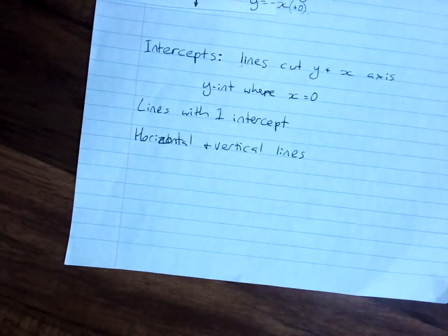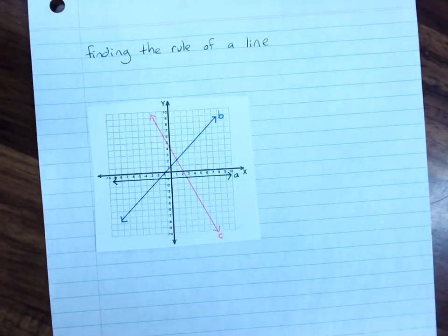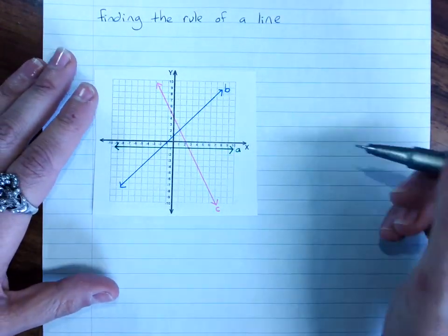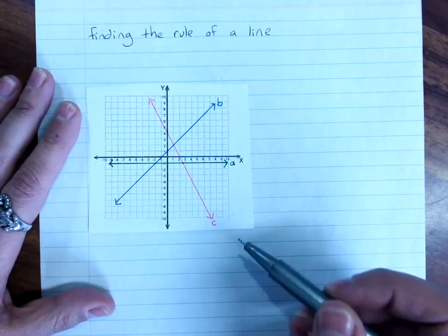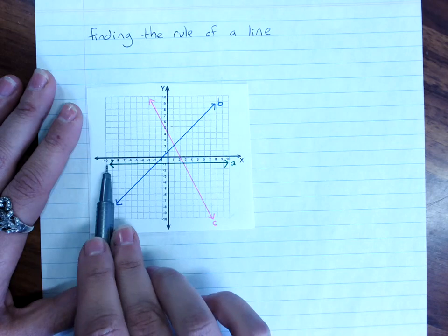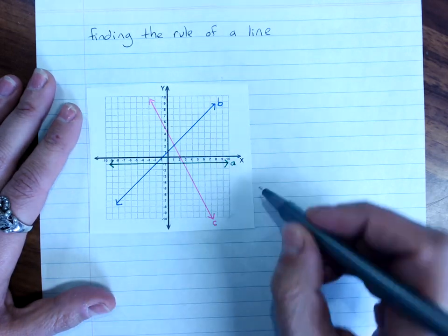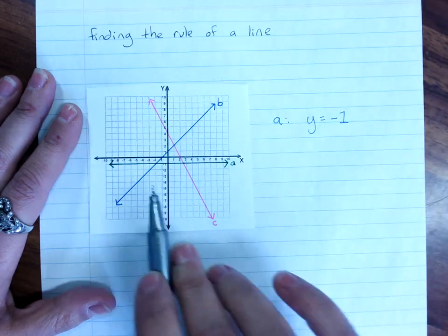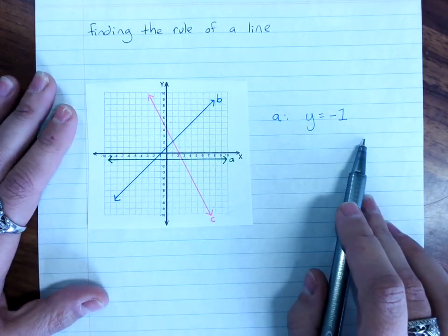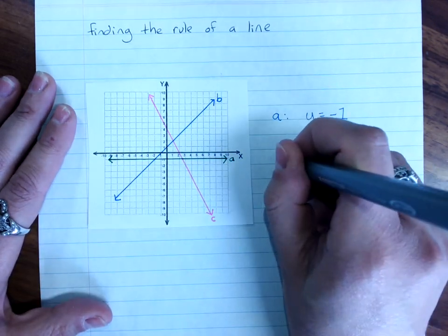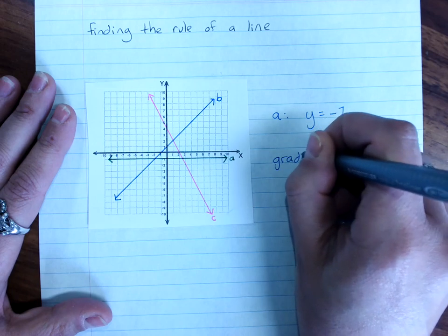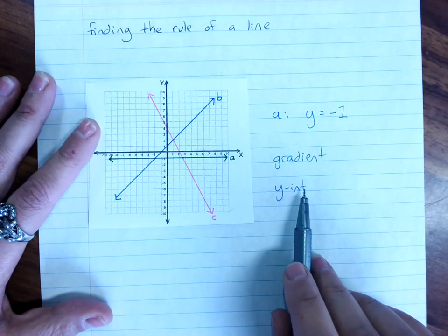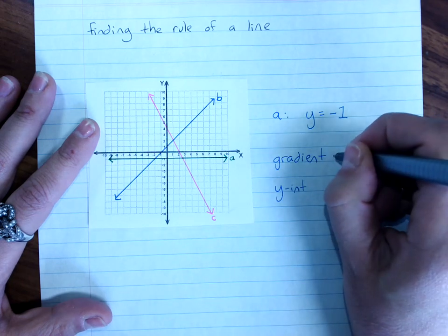Now, what we need to be able to do then is find the rule of a line. And you can do this with a table or with a graph. Now, if it's a horizontal or vertical line, we just learned that. You can look at this. You say, this line only goes through y equals negative 1. So line A, the rule is y equals negative 1. That's it. Horizontal and vertical lines, the rule is easy. For any other lines, you need the gradient and you need the y-intercept. You can read it from the graph.